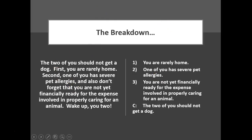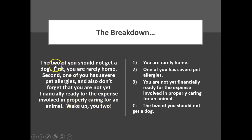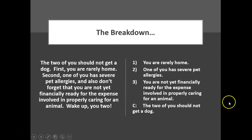Here's the breakdown. The conclusion: the two of you should not get a dog — this is what this passage is trying to convince you of. The premises: one, you're rarely home; two, one of you has severe pet allergies; three, you're not yet financially ready. Notice 'first' and 'second' language is trimmed out. And 'wake up, you two' is a goner — it's not a proposition, so it doesn't belong in the argument. Trim all the fat.